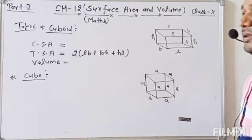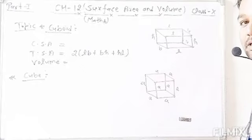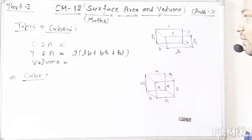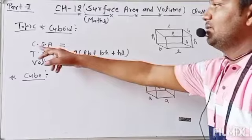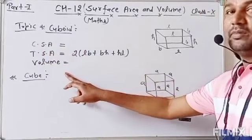Area of rectangle, you can see, length into breadth, which I have studied in previous class. Okay, so we will talk about curved surface area, CSA, and TSA and volume of cuboid.